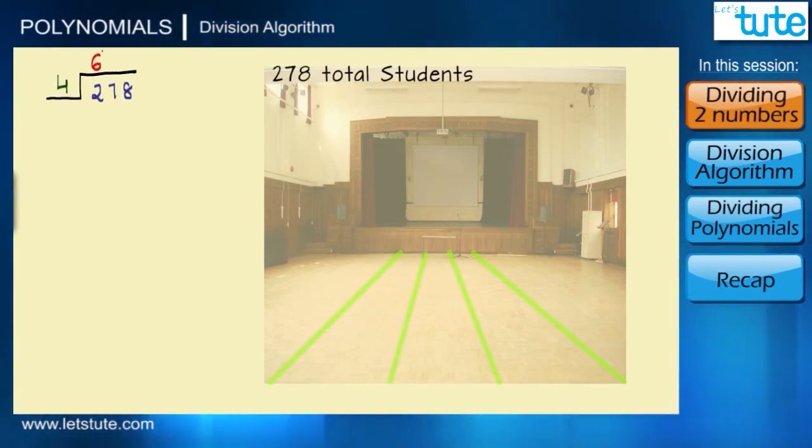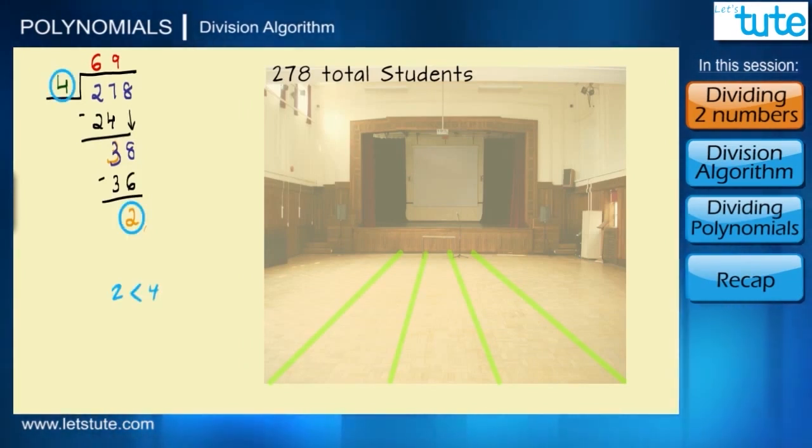So 4 times 6 is minus 24, we're left with 3 and 8 is carried down. Now 38 becomes our new dividend. So again 4 times 9 is 36 and we're left with 2. So this is the point where we stop our division because here the remainder is lesser than the divisor or it has to be 0.